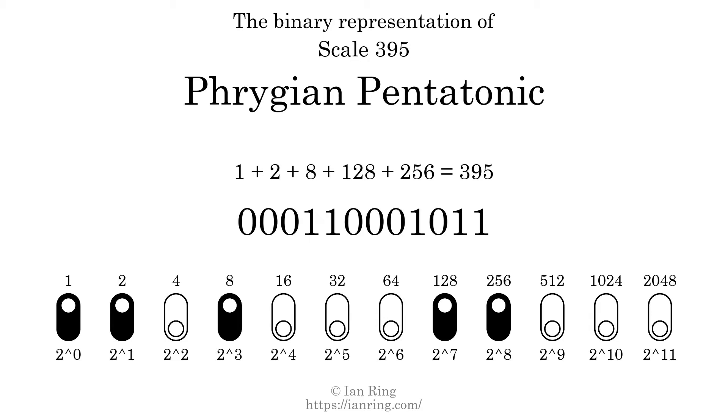The scale number not only enumerates the scale with a unique index, but it also literally describes the tonal content of the scale, represented as a binary number in base 2. The scale number is 0, 0, 0, 1, 1, 0, 0, 0, 1, 0, 1, 1.